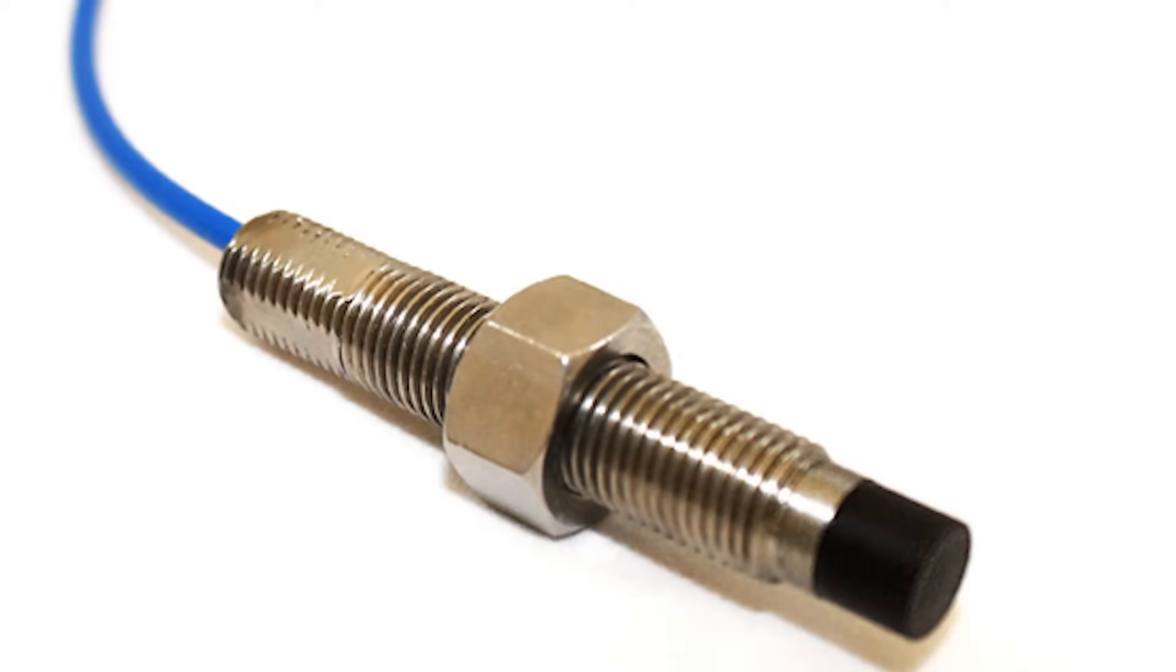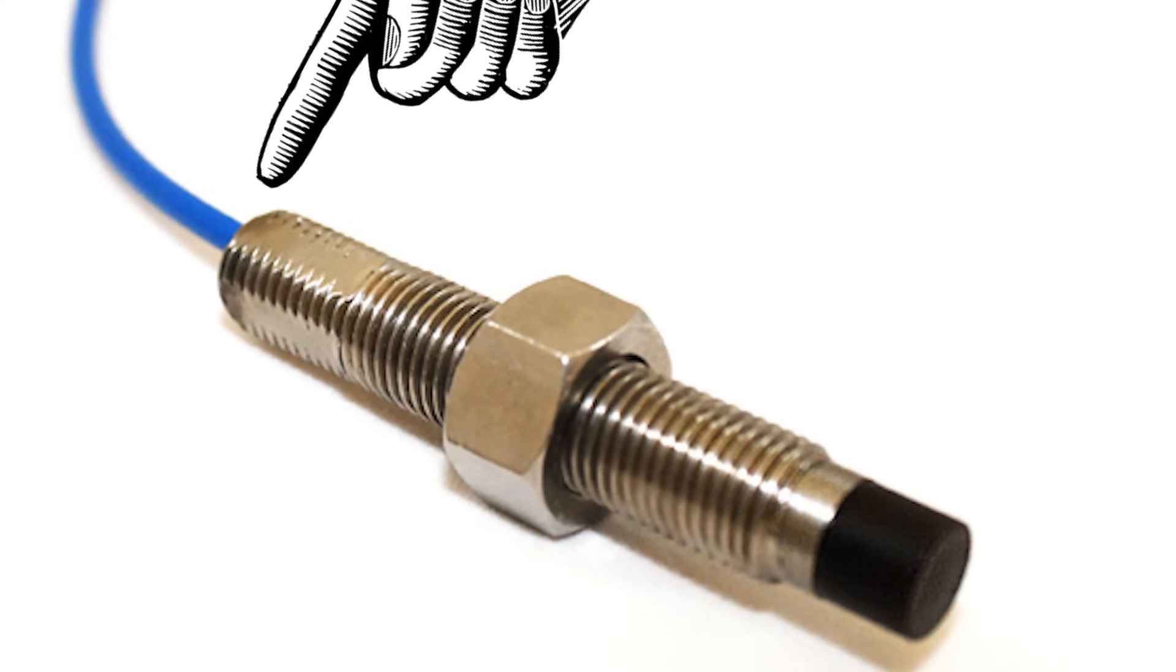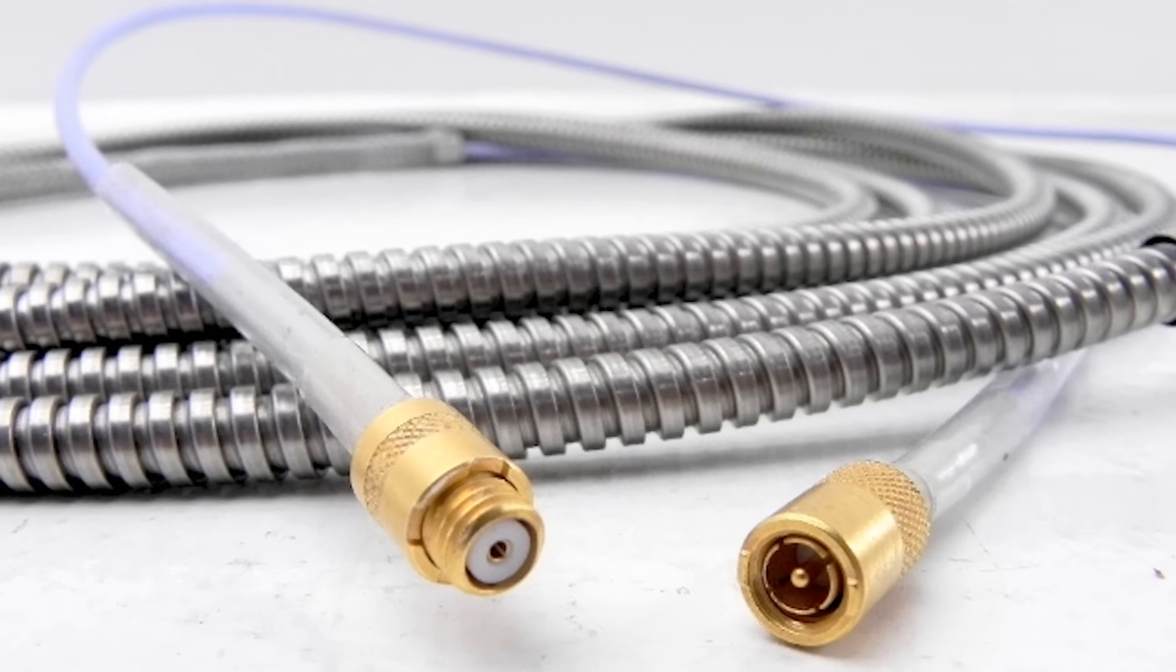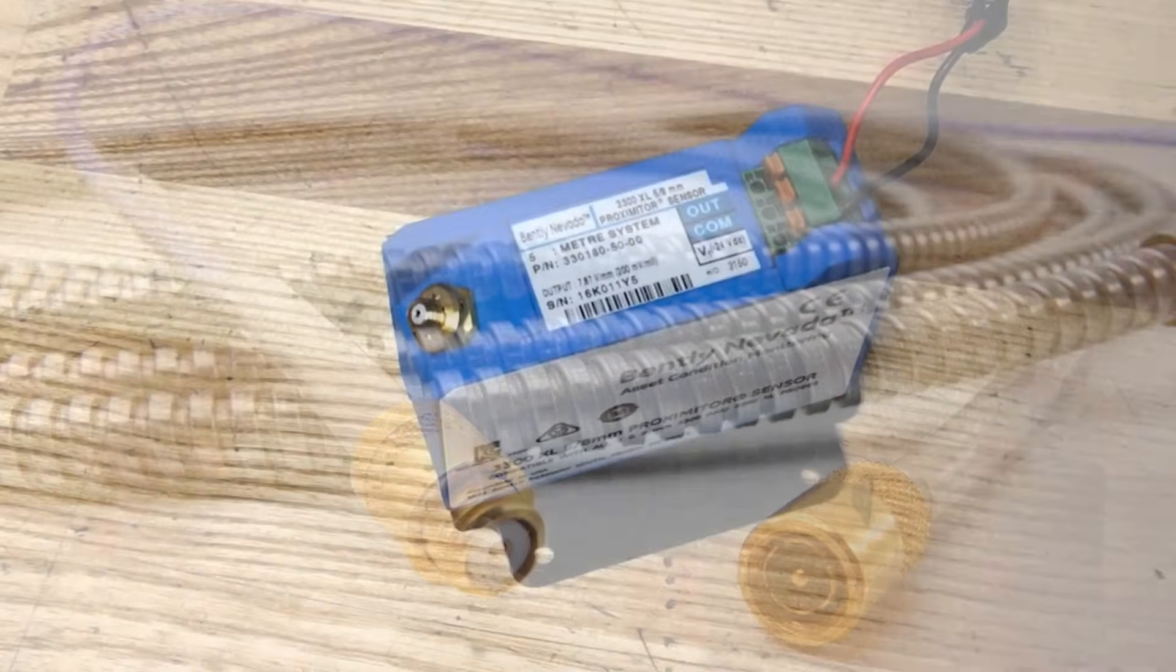The basic proximity probe consists of a pancake coil encased in a non-conductive protective layer. The coil is mounted on the end of a threaded rod. A special coax extension cable is typically used to connect the coil to a proximitor.